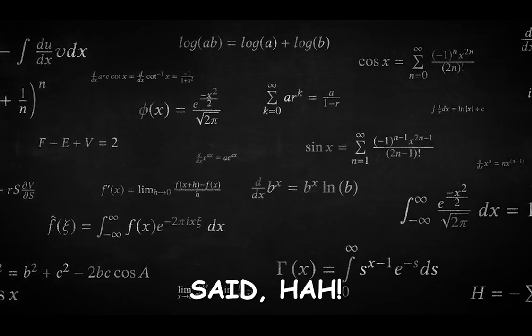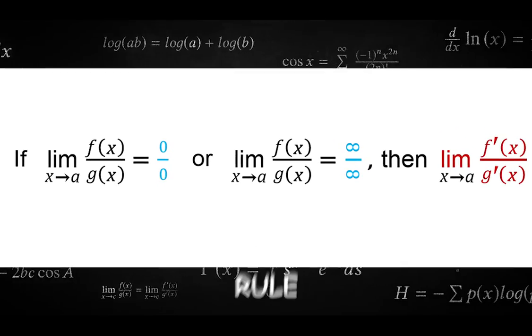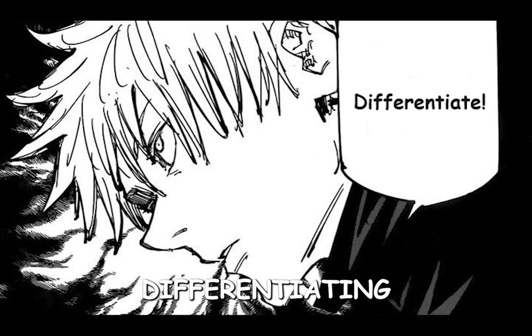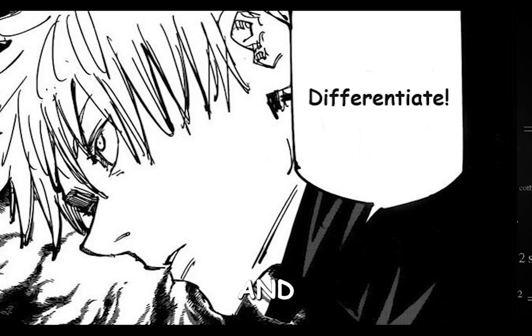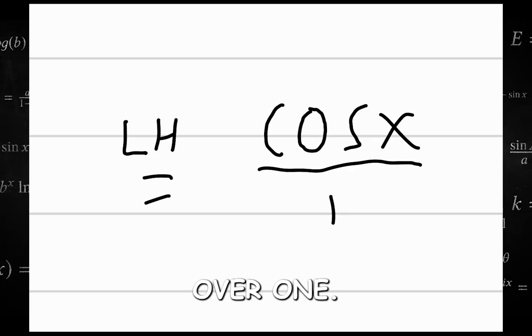The maths student said, ha, just use the hospital's rule and began differentiating the numerator and denominator and ended up with cosine x over 1.